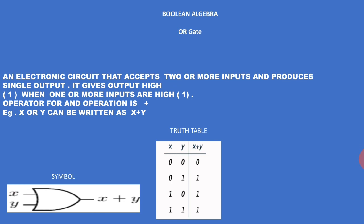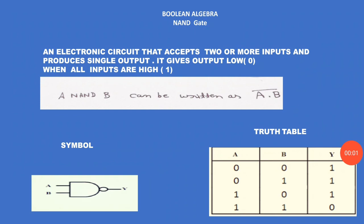You can see the symbol of the OR gate. In the truth table, X and Y are the inputs and X plus Y is the output. We observe that wherever even a single one is present, the output is one. When all inputs have value zero, the output produced is zero.